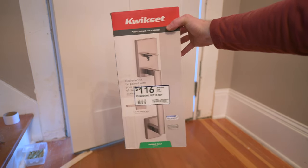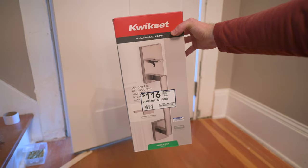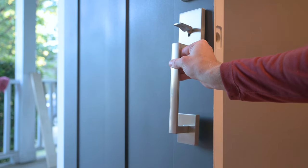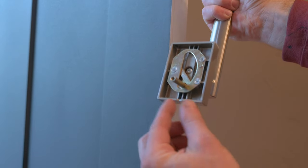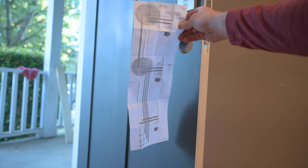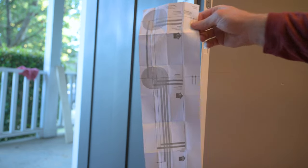This is the Kwikset handle set I got. And it goes on the door like this, which requires a hole to be drilled through this new door. And thanks to this clever little piece, there's quite a bit of tolerance in where that hole goes. The first step is to take this template and fold it down the dotted line.